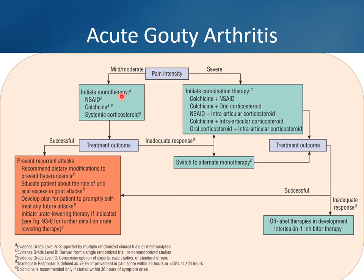Looking at pain intensity for initial monotherapy: NSAIDs, colchicine, and corticosteroids are all equally efficacious. I'd probably go with an NSAID first line, unless the patient says they've never responded to NSAIDs and prefer colchicine. If they need combination therapy, use complementary mechanisms — NSAID plus colchicine, or corticosteroids plus an NSAID. Then once resolved, move down to urate-lowering therapy.